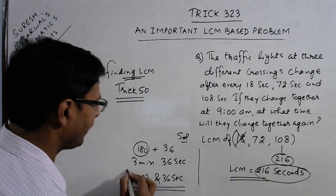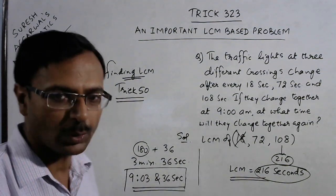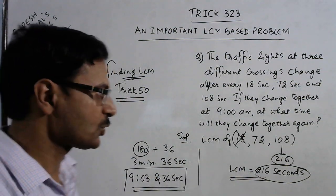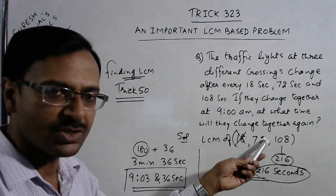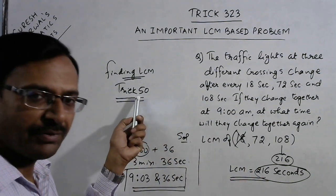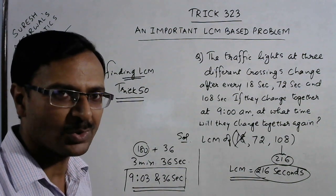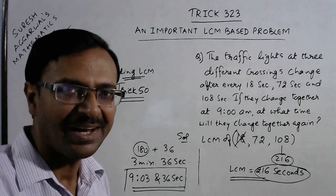If they have changed together at 9 AM, then the next change will be at 9:03 AM and 36 seconds. This is the time when they will change together again. So students, a very important problem for LCM, and you need to learn this shortcut by doing Trick number 50 on the channel. If you like it, share it and subscribe to the channel.